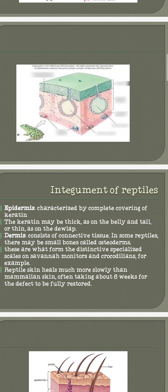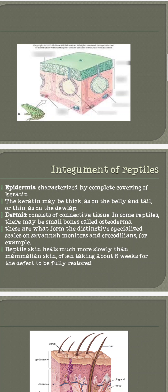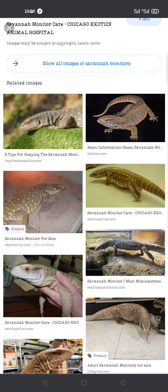Keratin makes the skin impermeable to water. After the epidermis, the dermis contains connective tissues. Some reptiles also have small bones within their skin called osteoderms, which is a characteristic of savanna monitors and crocodiles. Let me show you pictures of savanna monitors and crocodiles.